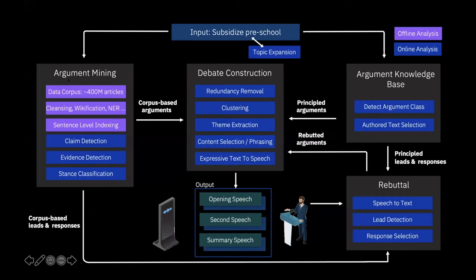The first component is called argument mining. The goal of this component is to retrieve the related claims and evidence given the topic from a very big corpus. We also have the argument knowledge-based component, whose goal is to map the specific topic to nodes in the argumentative knowledge base and come up with possible principal arguments which can be used in the debate.